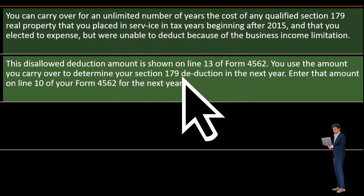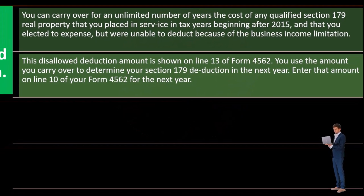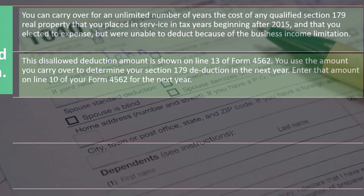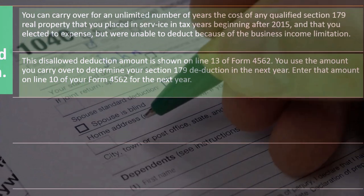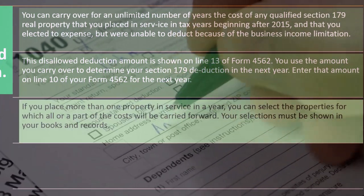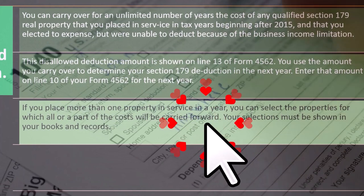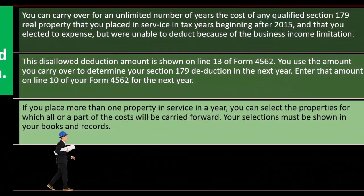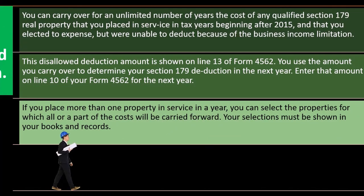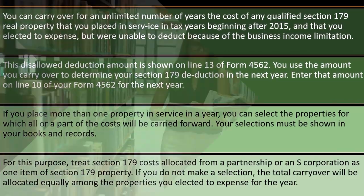You use the amount you carry over to determine your Section 179 deduction in the next year. Enter that amount on line 10 of your Form 4562 for the next year. If you place more than one property in service in a year, you can select the properties for which all or part of the cost will be carried forward. Your selections must be shown in your books and records.